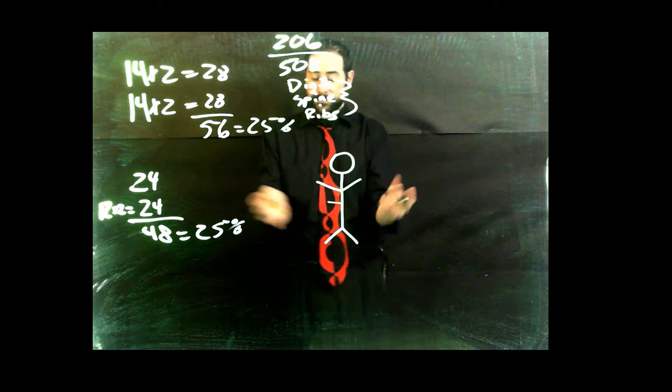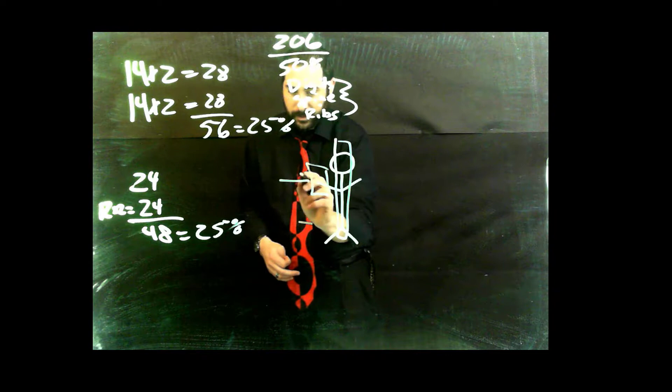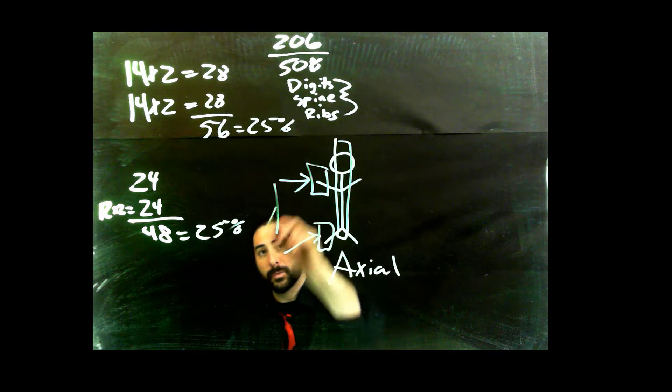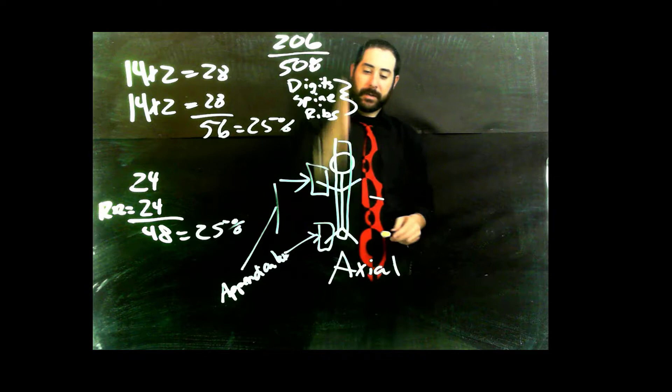So when we're looking at this stick person, and we said, okay, well, this is a stick person's skeleton, there is essentially something right down the middle, right here. And then there is all of this stuff off to the side. If it's right down the middle, we're going to call it the axial skeleton. If it's any of this stuff over here that's attached, we're going to call it the appendicular skeleton.